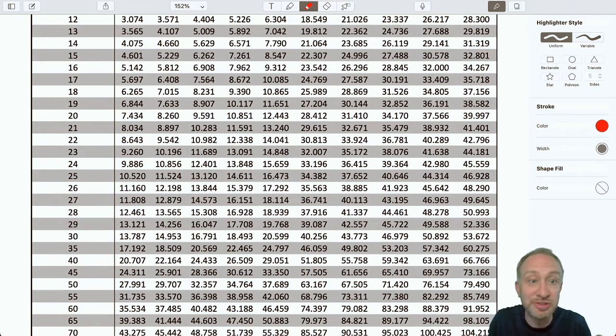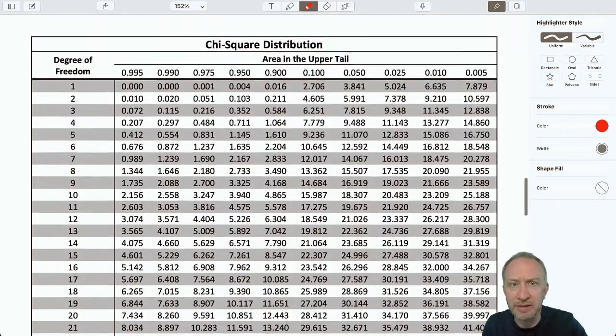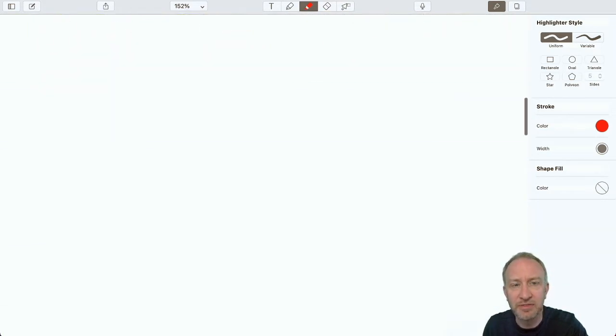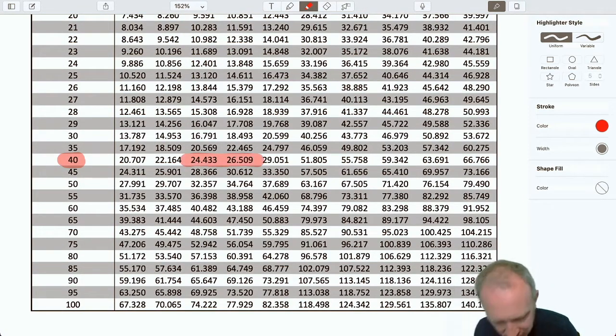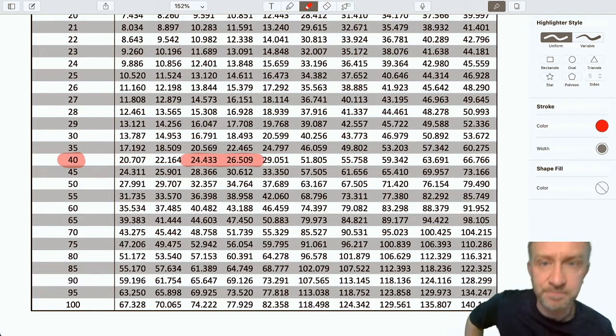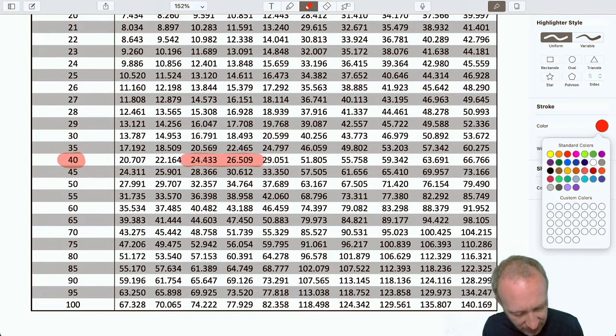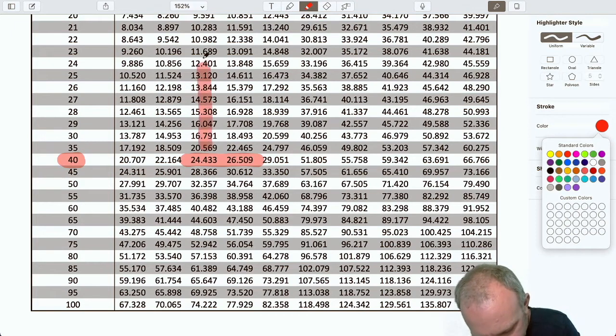Now again, just like our t-distribution, we lose some accuracy when we're using these tables. So scrolling down, I can see it goes by one unit at a time up until about 30, and then it's going 5 at a time. 35, 40, 45, 50. Well, I'm going to just choose the nearest value. I'll round it to the closest value, which for us is going to be 40. So yes, we do lose some accuracy when we're doing this by hand and we're using these tables, but that's the trade-off. Otherwise, we'd have huge, big distribution tables. Now I'm looking again for my test statistic, which was around 25, 25.07.